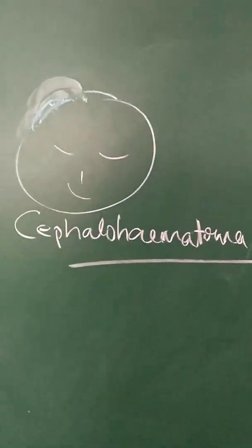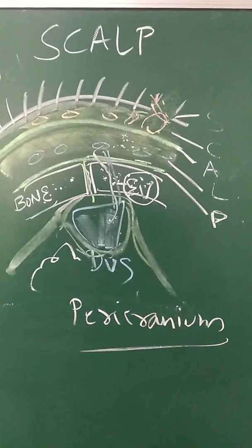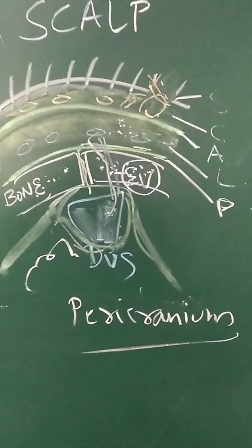Let us understand the anatomical basis for the same. In scalp there are five layers: the skin, connective tissue, aponeurosis, loose areolar tissue, and the pericranium.